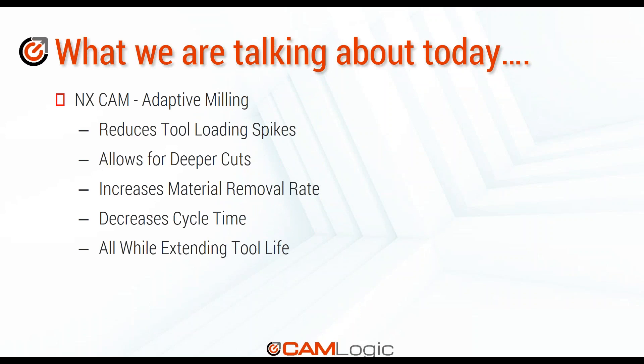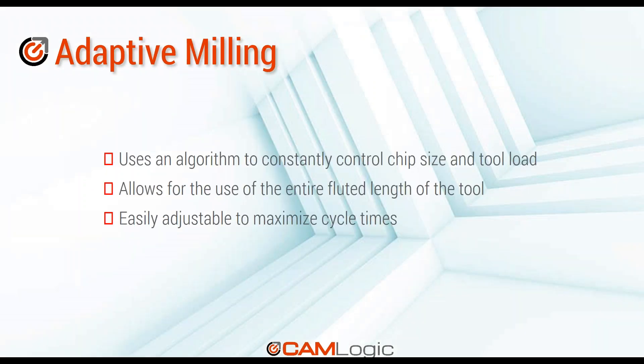Adaptive milling is a roughing strategy. The key feature is that it reduces tool loading spikes, so we can make deeper cuts and take more material off in a given amount of time. Because we're evenly wearing the tool, we can also get more material removed from a single tool.